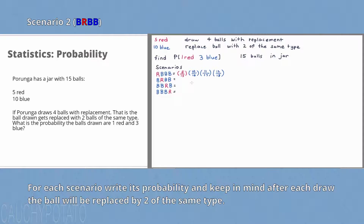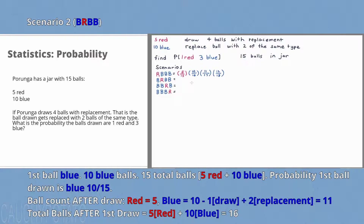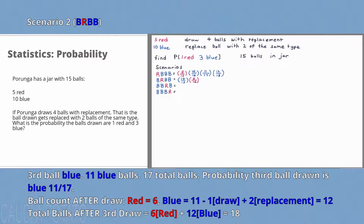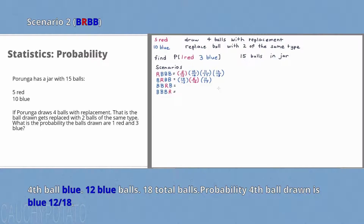The second scenario is: first ball blue, second ball red, and the last two blue. First ball drawn is blue: 10 blue balls with 15 total, so 10/15 probability. Second ball drawn is red: 5 red with 14 plus 2, so 16 total balls — giving 5/16 probability. Third ball drawn is blue: following the with-replacement pattern, 11/17 probability. Fourth ball is blue: same pattern, 12/18 probability.